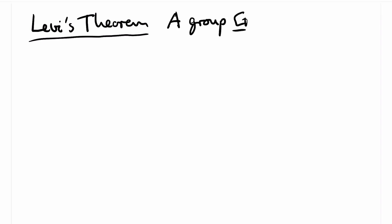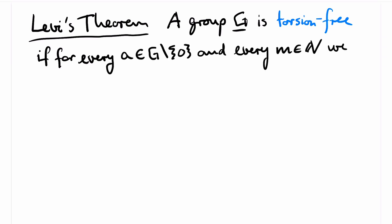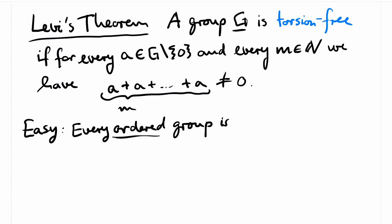A group is called torsion-free if the only element of finite order in G is zero. In other words, if you take a group element different from zero and you keep on adding this element, you never reach zero. It is easy to see that every ordered group must be torsion-free.